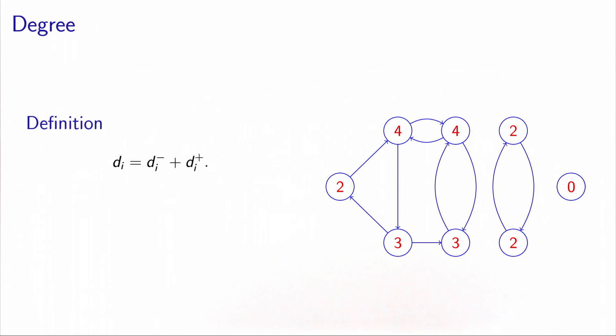Finally, the concept of degree that we will denote by d_i is simply the sum of the in-degree and the out-degree. The degree counts the number of arcs that are incident to the node, regardless of whether the arc is leaving or reaching the node. This node has a degree of 2 because there are 2 arcs incident to it.